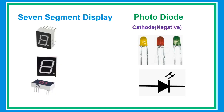A seven-segment display is a form of electronic display for displaying decimal numerals, and is an alternative for more complex dot matrix displays. A photodiode is a semiconductor device that converts light into electrical current.